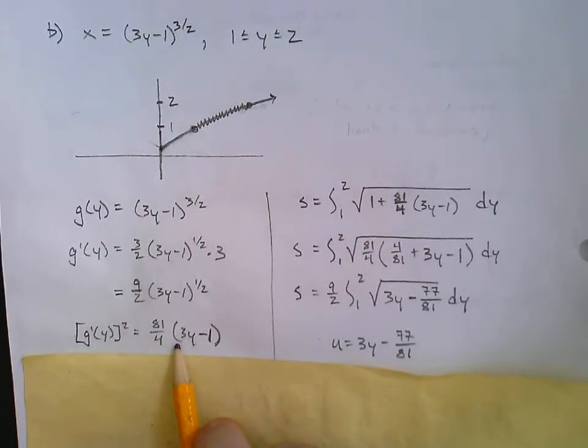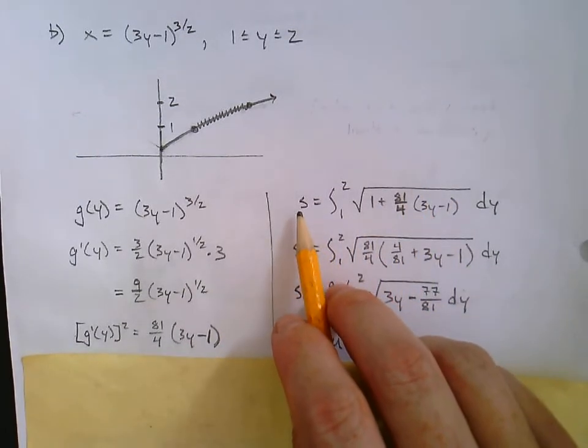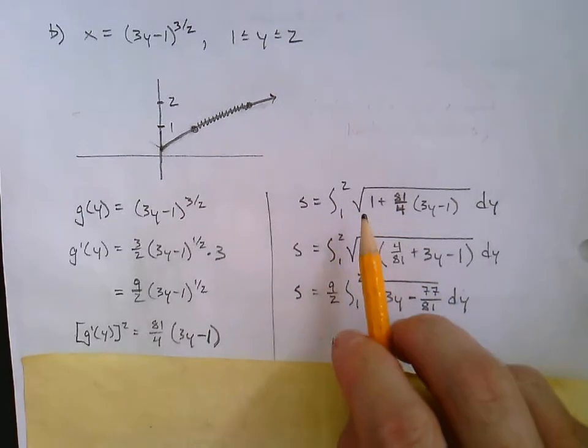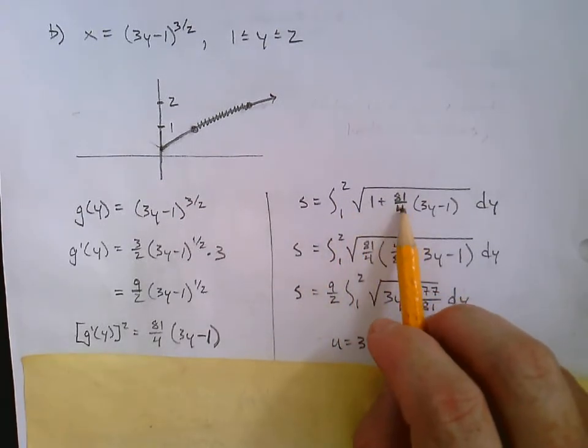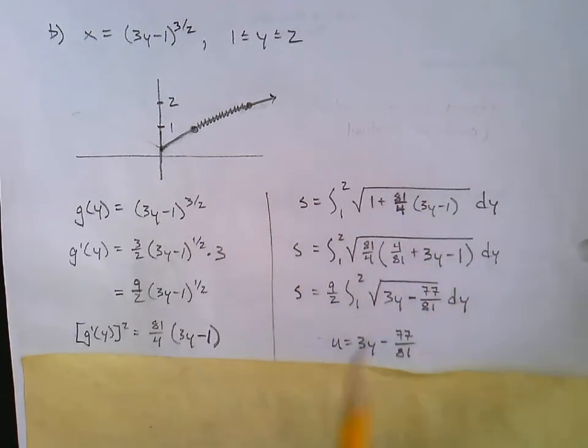So we're going to take this, once we've squared, and we're going to put it right into our formula. So here, the arc length s equals the integral from 1 to 2 square root, 1 plus 81 over 4 times 3y minus 1. Don't forget, this is a dy, integrating with respect to y.